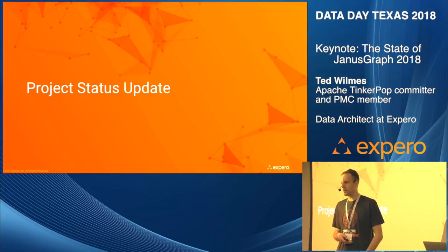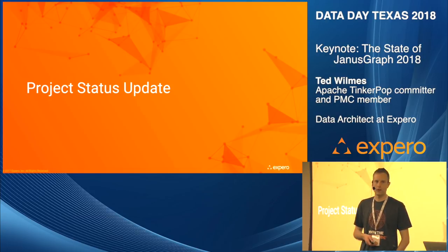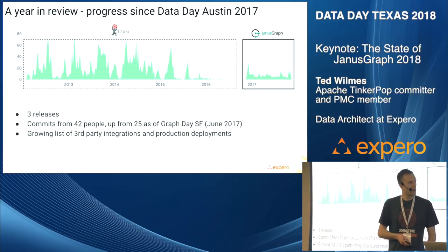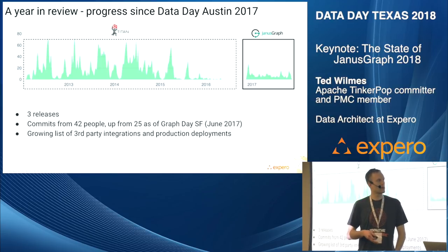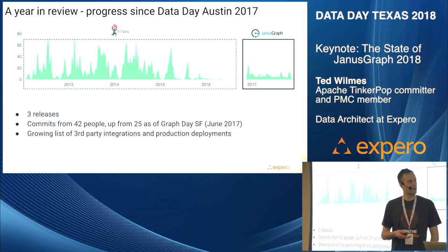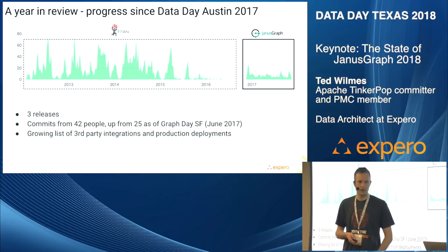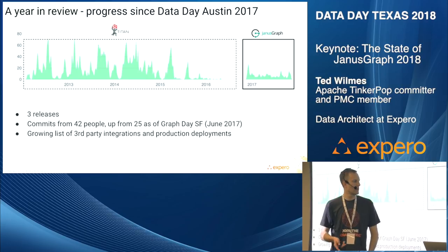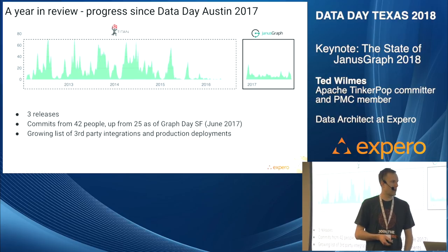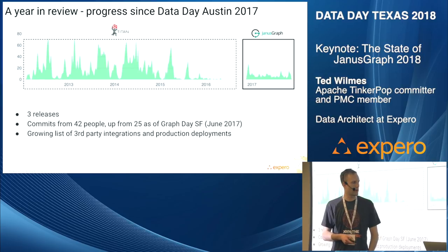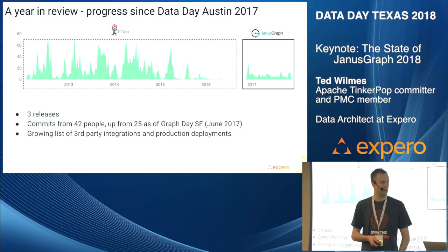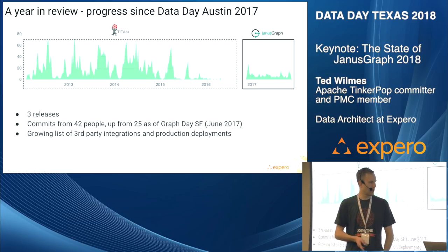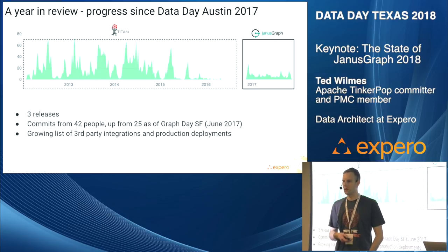Now for a quick update on where the project is right now and where it's going next. It was about end of 2016 when Janus forked. The first public announcement was at GraphDay in Austin in January. We've had three releases, commits from 42 people — at the San Francisco GraphDay in June 2017 we had 25 committers, and now we're up to 42. There's also a growing list of third-party vendors integrating with JanusGraph, and many of those came on just this year.